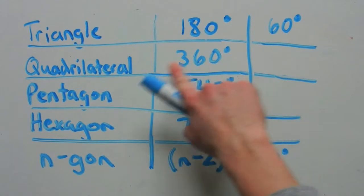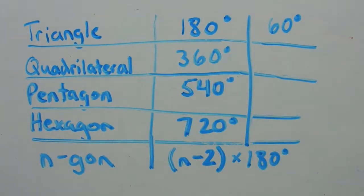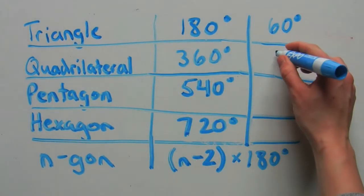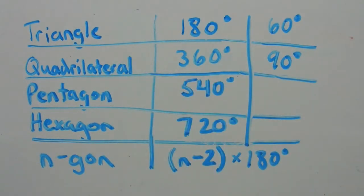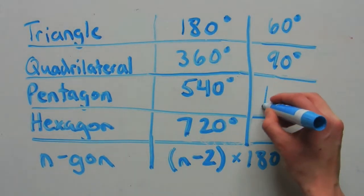360 degrees divided by four, because it's a quadrilateral, would give you 90 degrees. So a regular quadrilateral, which would be a square, is 90 degrees. A regular pentagon, having five sides, you divide 540 by five, and you get 108 degrees.